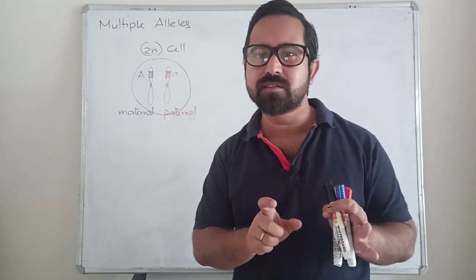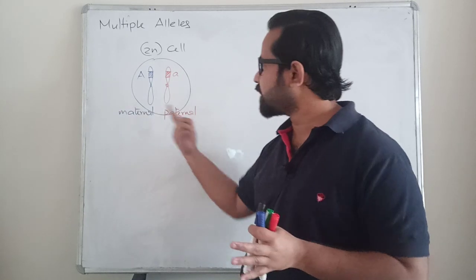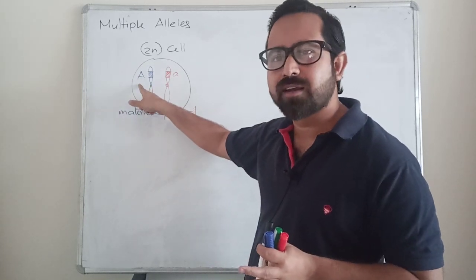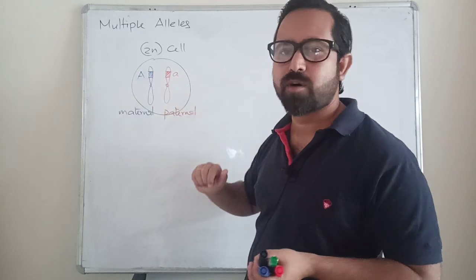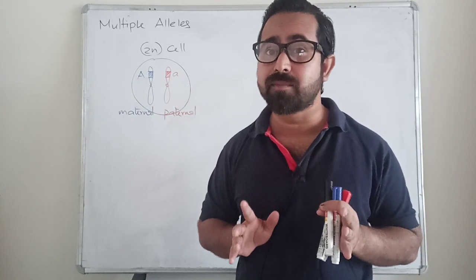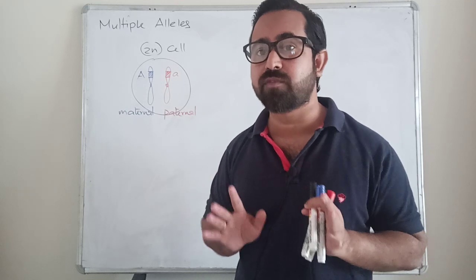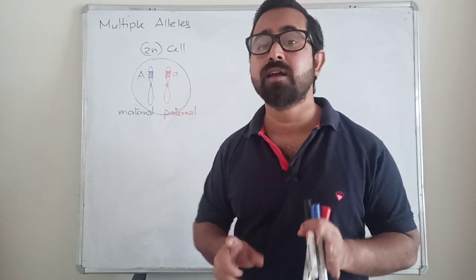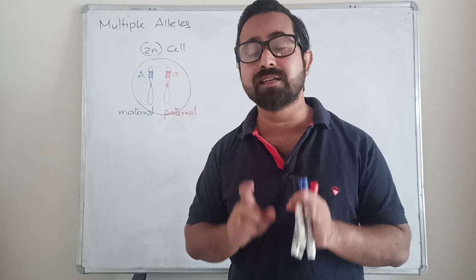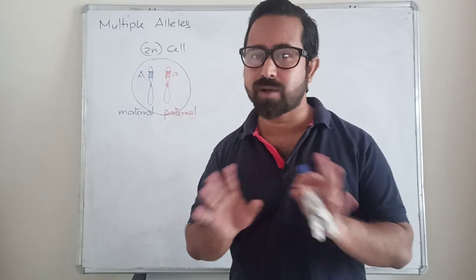That's what Mendel basically said — one gene has two variants, dominant and recessive. Capital A is the dominant allele and small a is the recessive allele. Those two alleles come from both of your parents — one from your mother and one from your father — and a diploid individual can always have just two alleles for a particular gene.